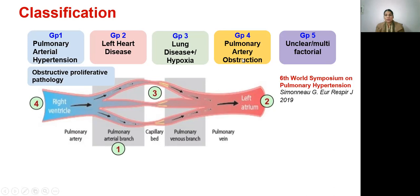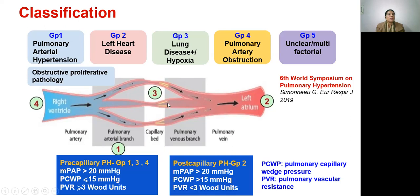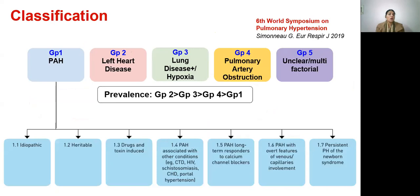At the sixth world symposium, it was recommended that in addition to mean pulmonary artery pressure at right heart catheterization, two other measurements are used in the definition: pulmonary capillary wedge pressure and pulmonary vascular resistance. Pre-capillary pulmonary hypertension, consisting of groups 1, 3, and 4, is defined as pulmonary capillary wedge pressure ≤15 and pulmonary vascular resistance ≥3 Wood units. Post-capillary pulmonary hypertension, group 2, is defined as pulmonary capillary wedge pressure >15 and pulmonary vascular resistance <3 Wood units. The most common group is group 2, followed by group 3, group 4, and group 1 is the least common.